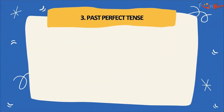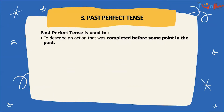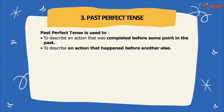Let's look at how we can use past perfect tense. Past perfect tense is used to describe an action that was completed before some point in the past, to describe an action that happened before another action.